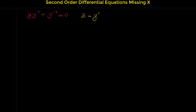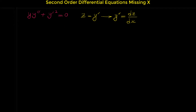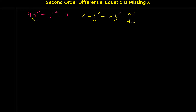Because we suppose y prime to be z, we also want to find y double prime in terms of z. If we take the derivative of y prime with respect to x, y double prime equals dz over dx. But note that since x does not appear in the differential equation, we want to get rid of x — so we don't want to replace y double prime with dz over dx directly, as that reintroduces x.